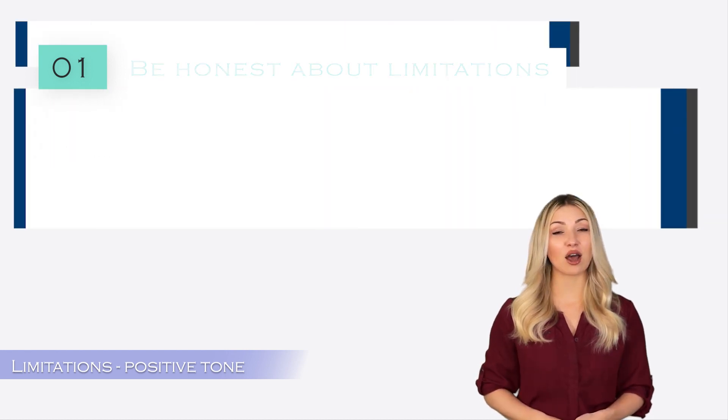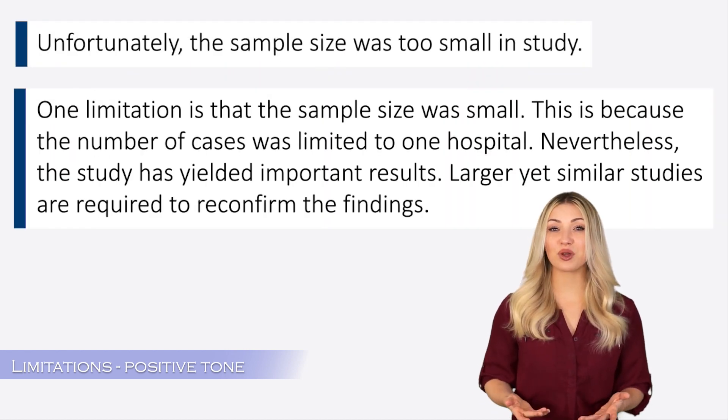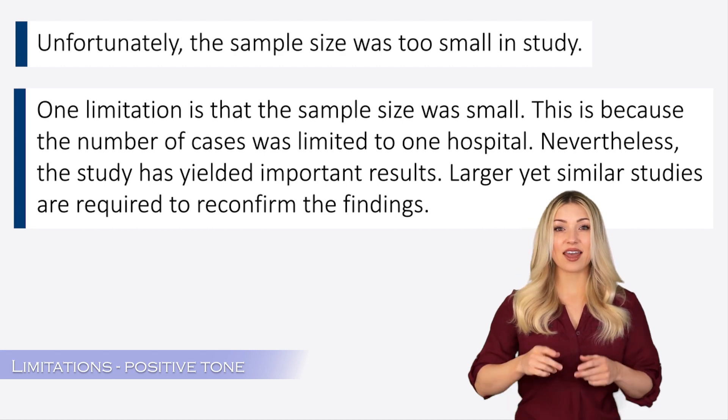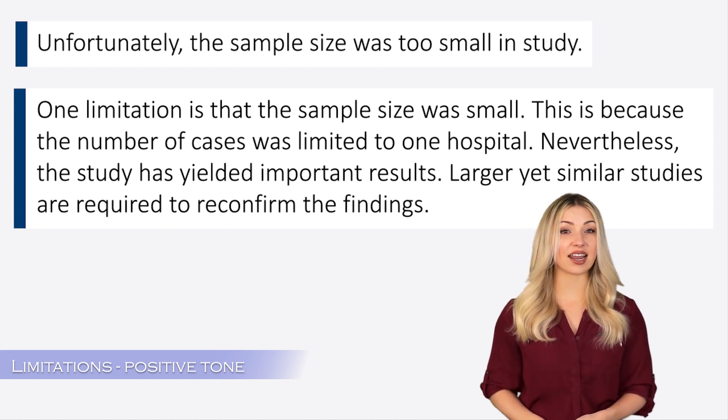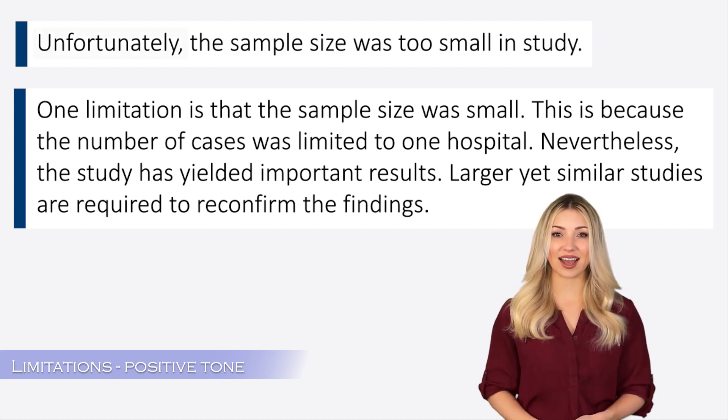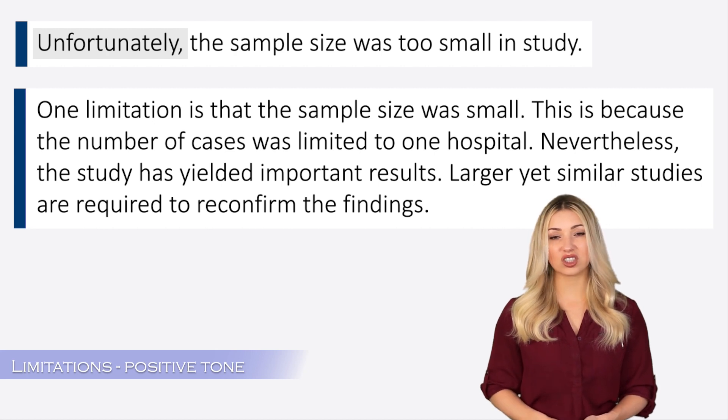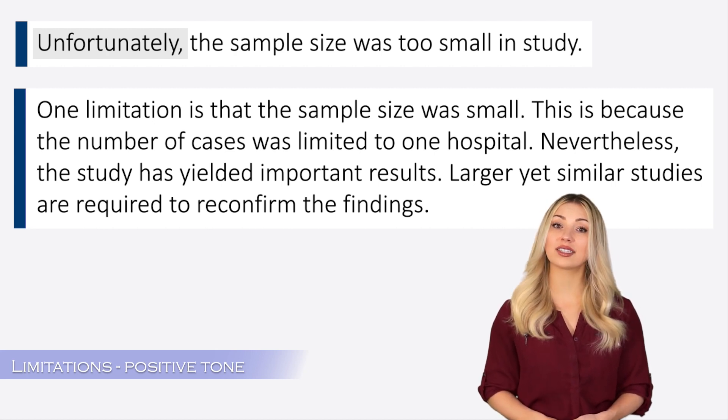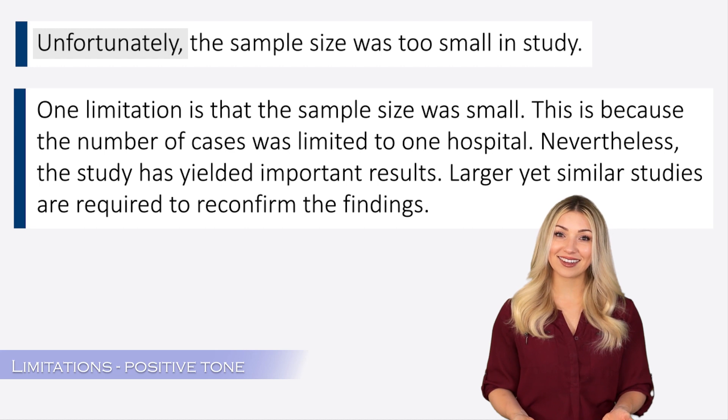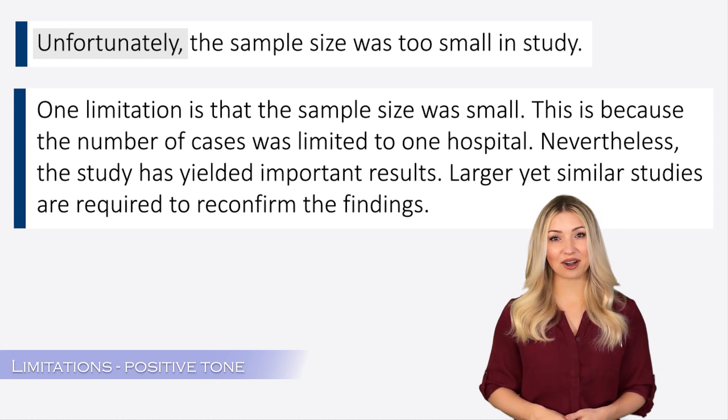Let's look at some examples. In this example, the authors are trying to tell the readers that one of the drawbacks of their study is the small sample size. In the first example, the authors start the sentence with the word unfortunately. This is a negative word. Don't use strong negative words like unfortunately, disappointing, etc.